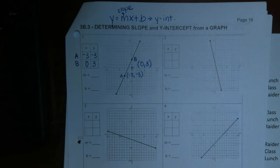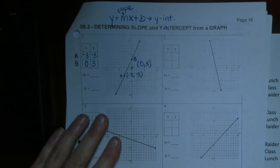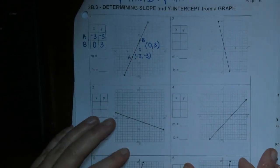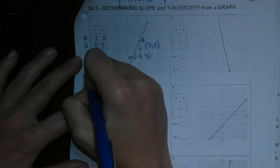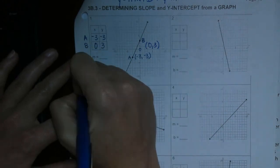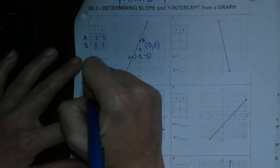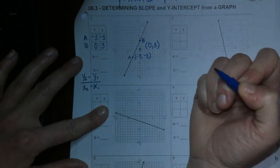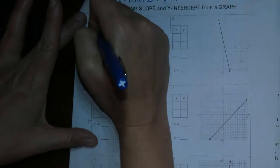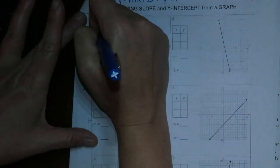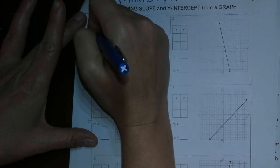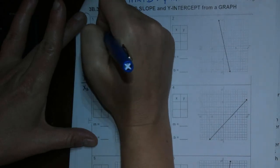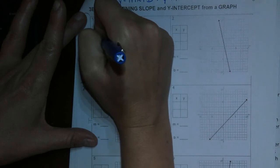So remember yesterday we learned our slope formula from two points is y2 minus y1 over x2 minus x1. So we have to plug those things in. And so this is your x1 and this is your x2, y1, y2.